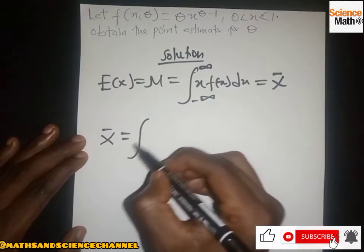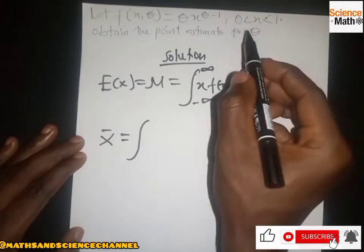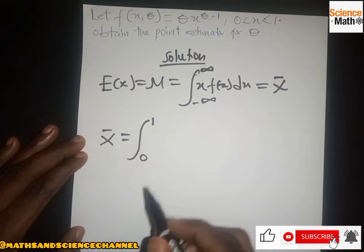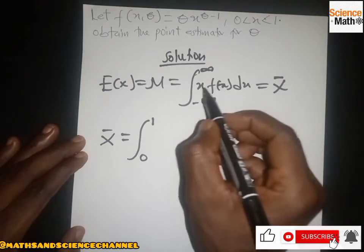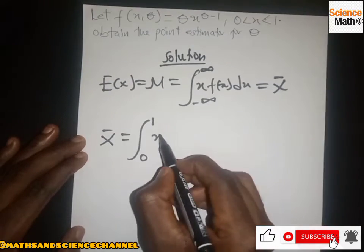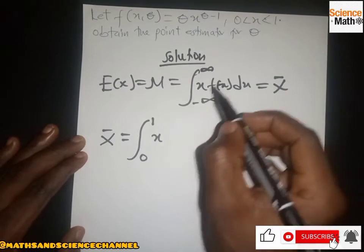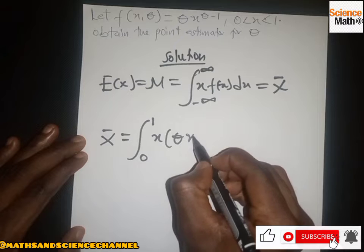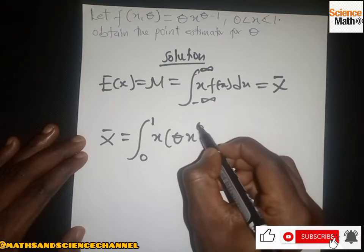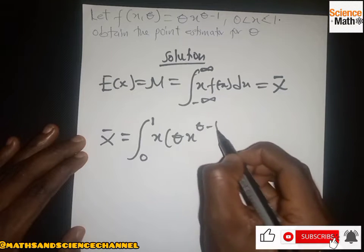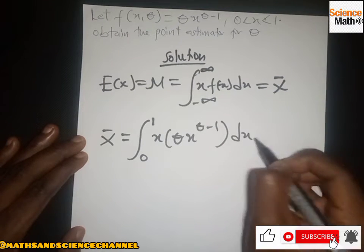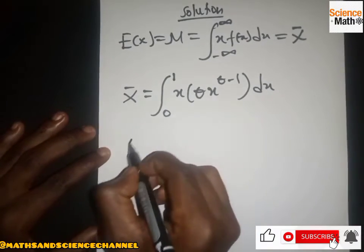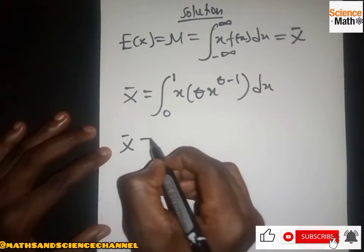The mean is equal to the integral from lower limit 0 to upper limit 1 — taken from the question — of x multiplied by f(x), which is θx^(θ−1), with respect to x. So we have that the mean equals the integral of x·θx^(θ−1) dx.